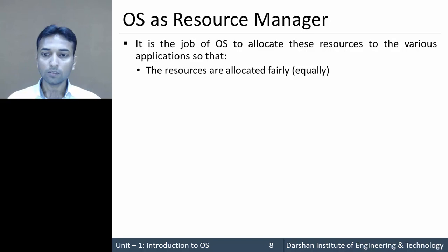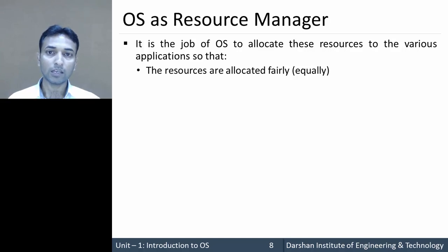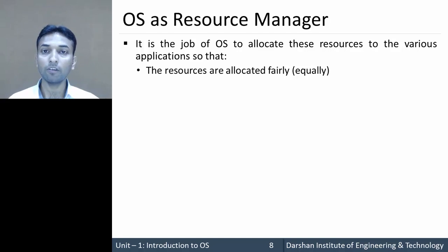First, resources are allocated fairly — that is, equally — meaning all resources are equally and fairly allocated to each and every process. There should not be unfairness between processes.